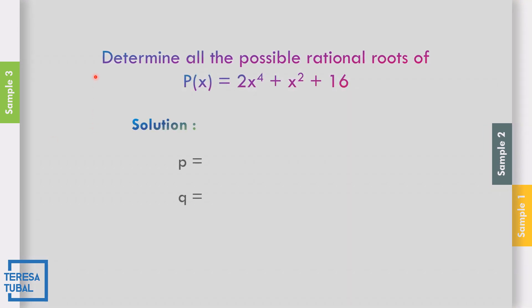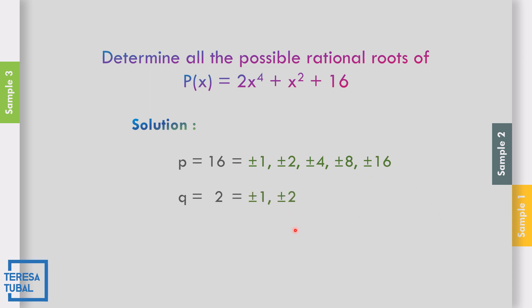Example number 2: Determine all the possible rational roots of P of x equal to 2x to the 4th plus x squared plus 16. The value of p is equal to 16 and q is equal to positive 2. The factors of 16 are positive-negative 1, 2, 4, 8, and positive-negative 16. The factors of 2 are positive-negative 1 and positive-negative 2.